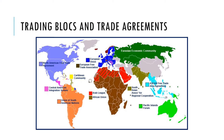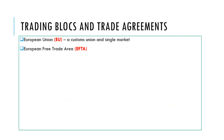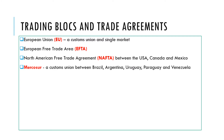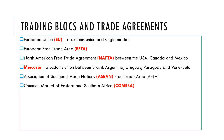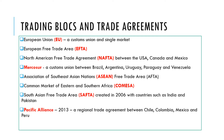There are many different trading blocs in existence and we should be aware of some of them. The European Union is one we'll look at shortly. There's also the wider European Free Trade Area, the North American NAFTA agreement, Mercosur in South America, a bloc in Southeast Asia, and others in Southern Africa, South Asia, Central America, around the Pacific, and in the Caribbean. These range from free trade areas to customs unions to common markets.